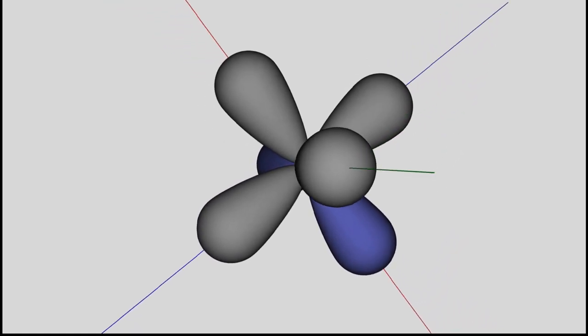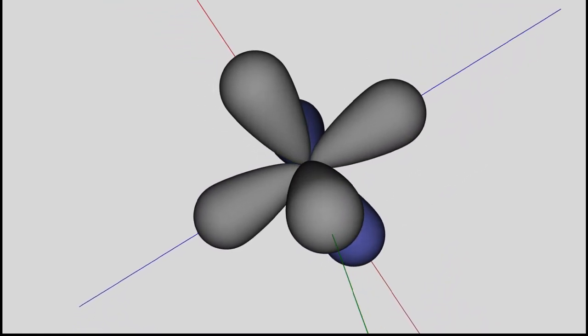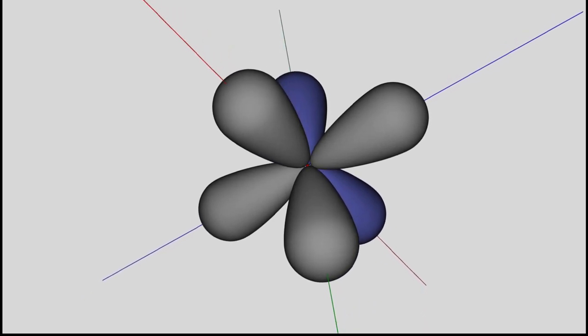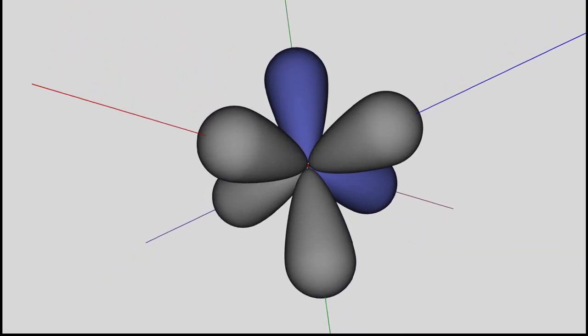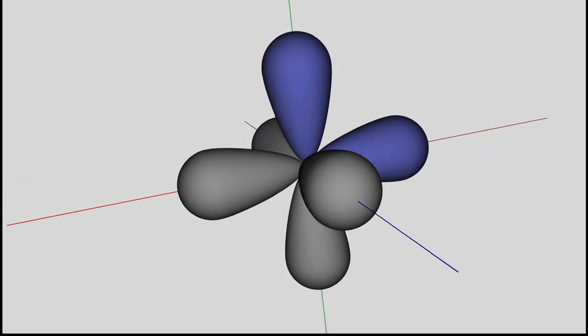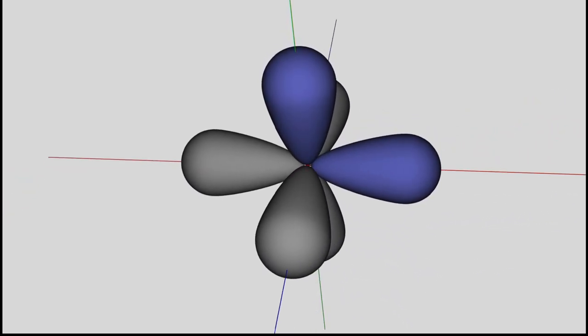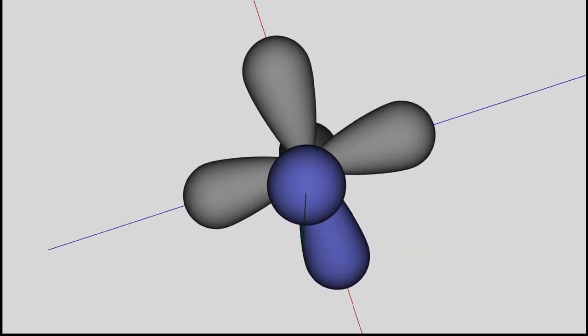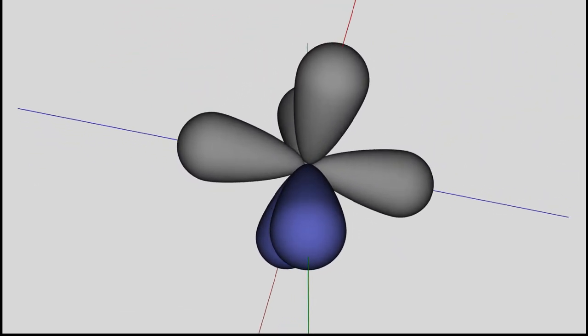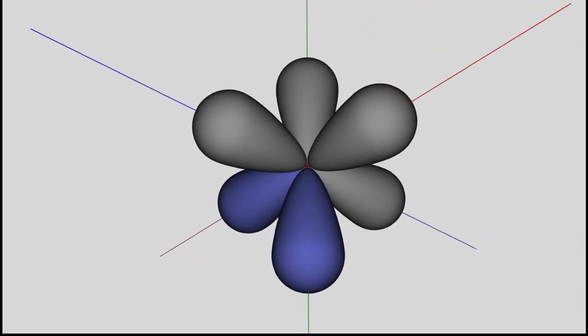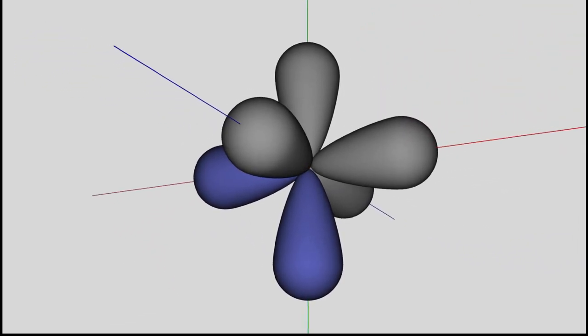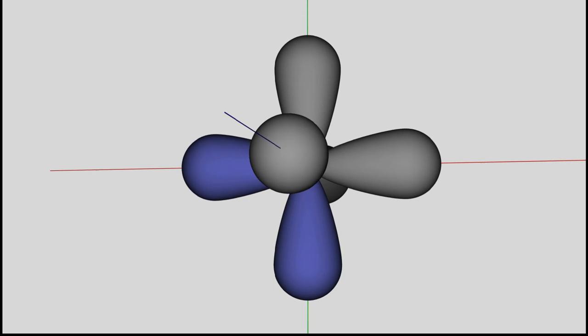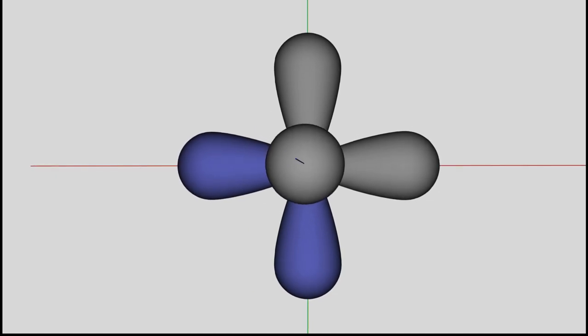Based on the steric configuration of the unfilled p orbital, those ligands should be arranged in an angle of 90 degrees between each other. However, the observed angles between the ligands is approximately 109.5 degrees. The reason for this lies in the hybridization of orbitals.